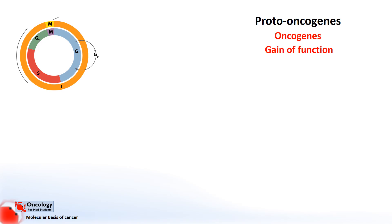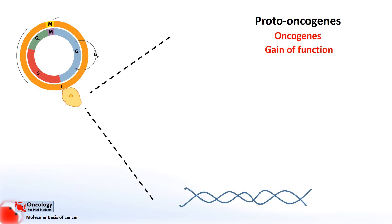The most commonly mutated oncogene in human cancers is the RAS oncogene. To see how it functions, we'll have to have a look inside the cell. In normal cells, in its inactive state, the RAS protein is bound to a molecule called GDP — guanosine diphosphate.